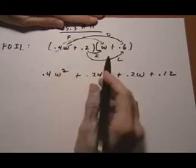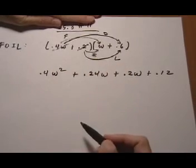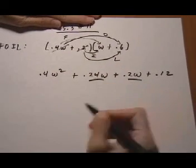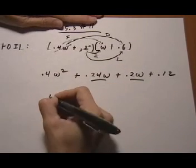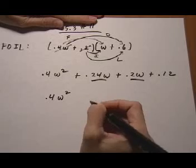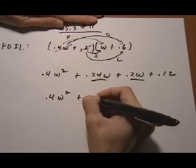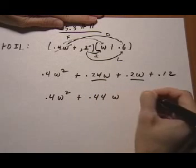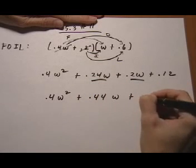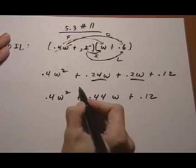And now that we've foiled out everything, we want to collect like terms, the W terms. .4W squared just comes down. .24 plus .2 is .44W plus .12 comes down. And that is our final answer.